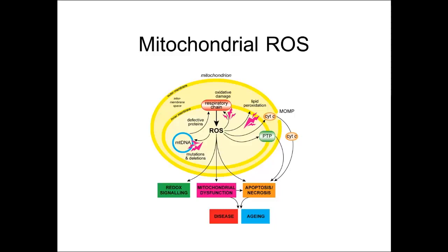So we have two aspects of mitochondrial ROS in pathology. First, ROS generally causes damage to the mitochondria that leads to cell death. Second, redox signals can come out of mitochondria, and if these are disrupted — too much or too little — that might cause chronic disruption to cell signaling pathways.